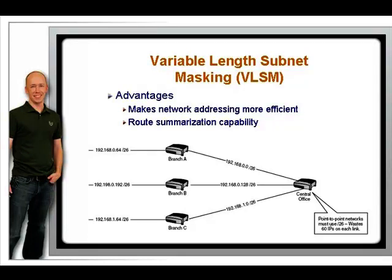The main push for VLSM came from the need to make networks the right size. Subnetting logically creates the appropriately sized networks, but without the capability for routing protocols to advertise the existence of both a slash 26 and a slash 30 network within the same system, prior to VLSM-capable routing protocols, the network in our example would have been confined to using only slash 26 masks throughout the system.